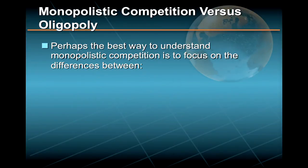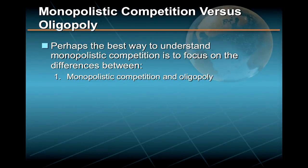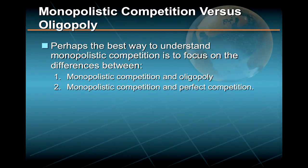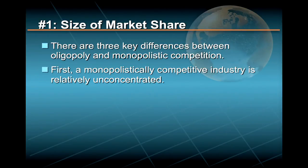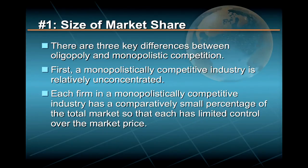Perhaps the best way to understand monopolistic competition is to focus on the differences between monopolistic competition and oligopoly on the one hand, and monopolistic competition and perfect competition on the other. There are three key differences between oligopoly and monopolistic competition. First, a monopolistically competitive industry is relatively unconcentrated — each firm has a comparatively small percentage of the total market, giving each limited control over market price.